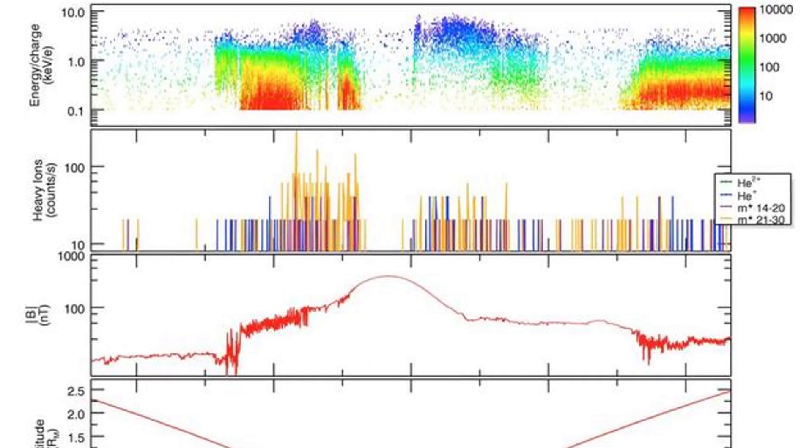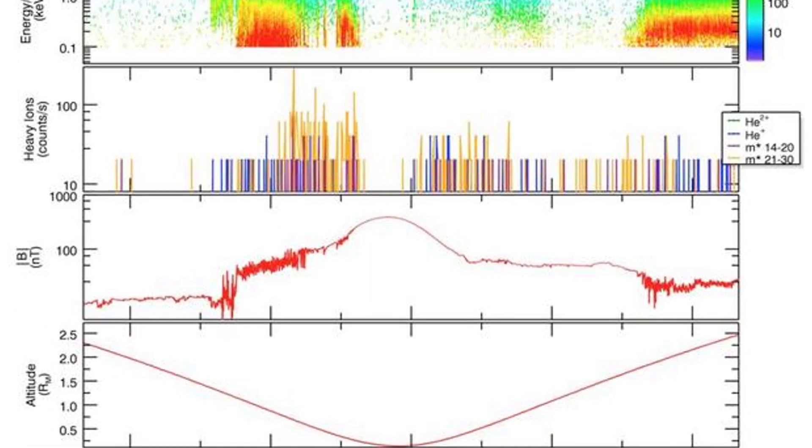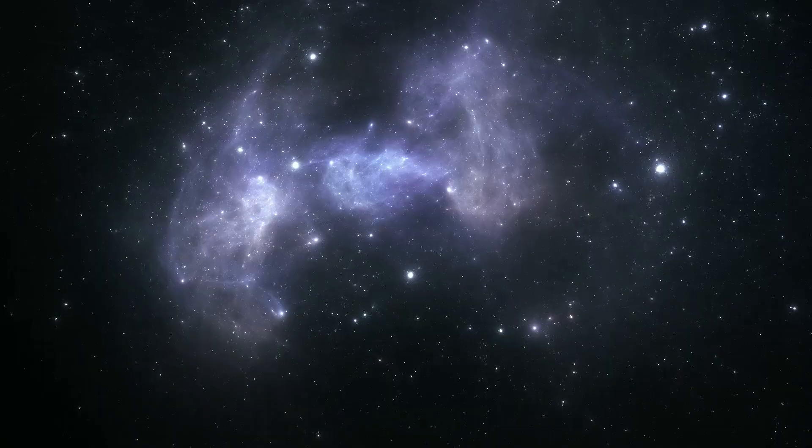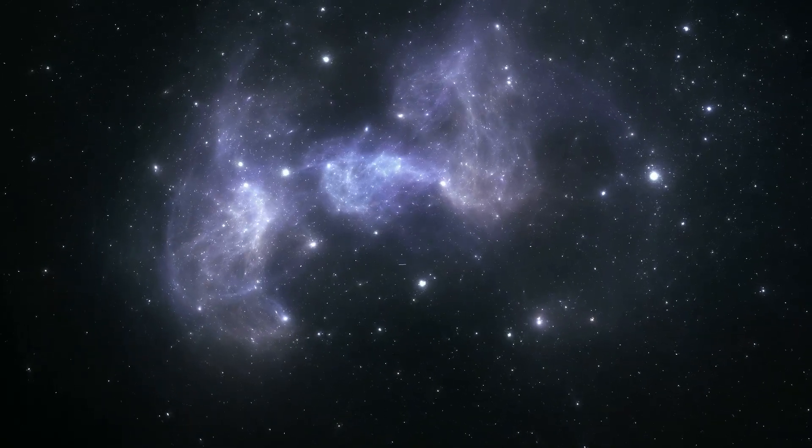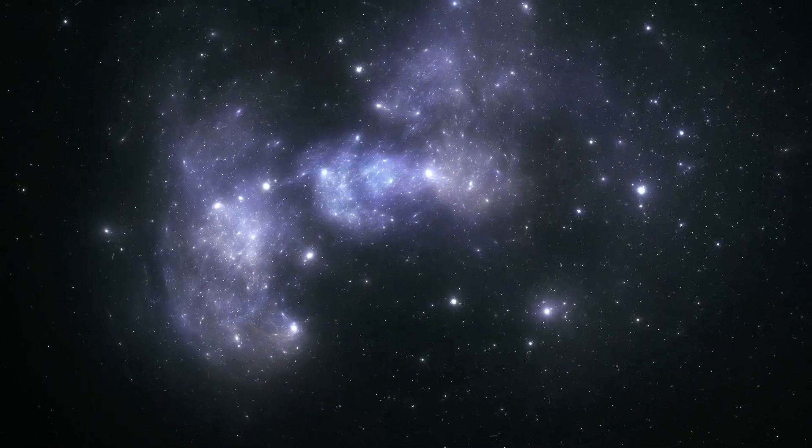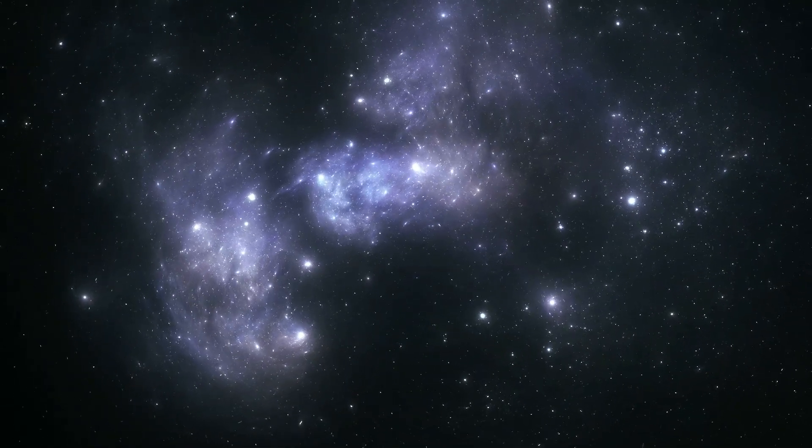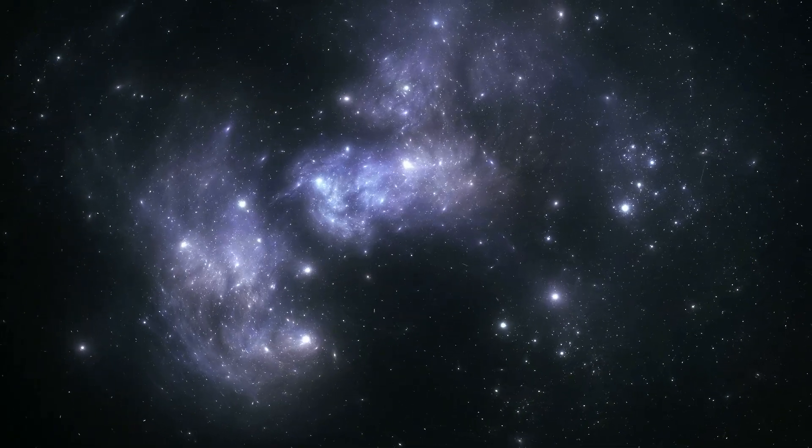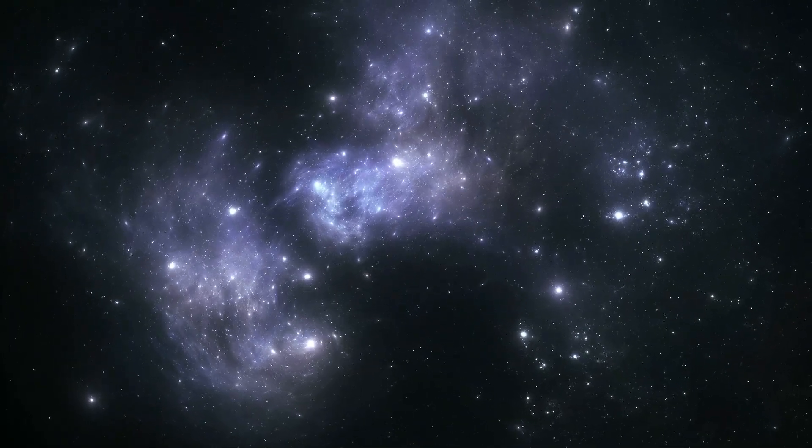Using its plasma science instrument, Voyager 1 made groundbreaking measurements of the interstellar medium. In April 2013, it detected a significant increase in plasma density, about 40 times denser than the solar wind plasma it had previously measured. This dense plasma environment was fundamentally different from anything within our solar system.